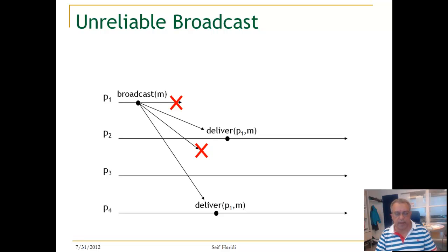What is normally provided is a broadcast abstraction that have no guarantees if the process that initiates a broadcast fails after broadcasting it, just sending the message. So in this case a typical unreliable broadcast would be a process broadcast a message, and later it crashes.